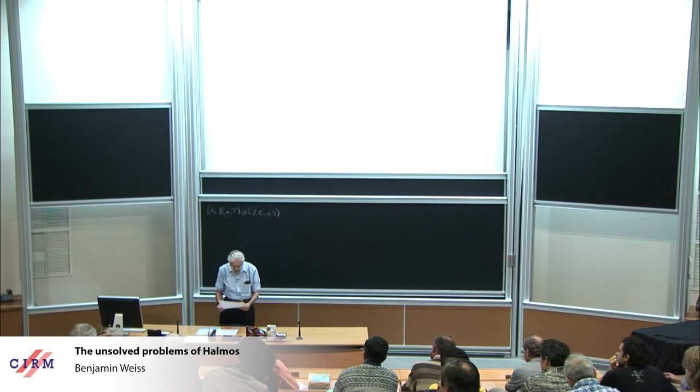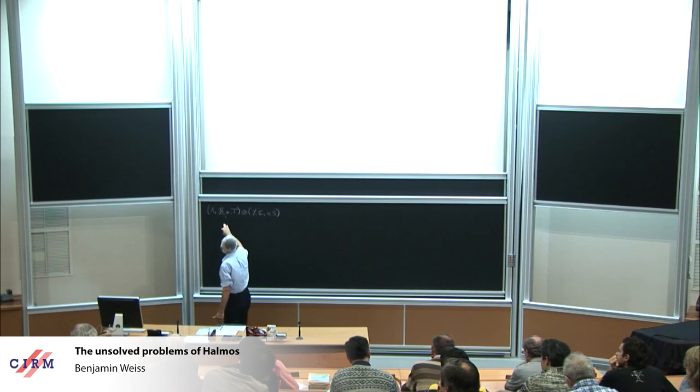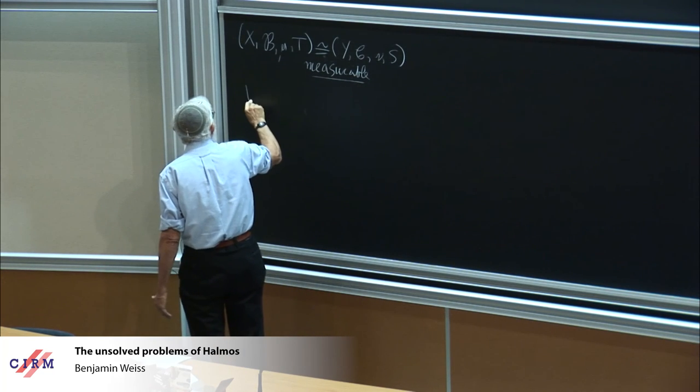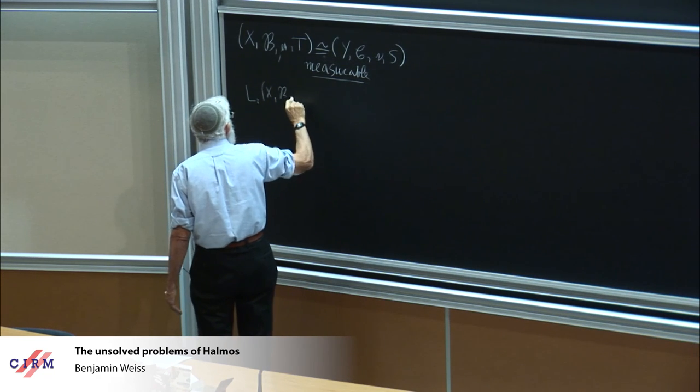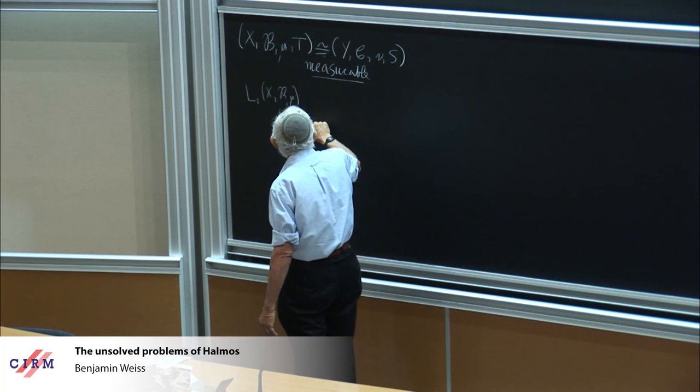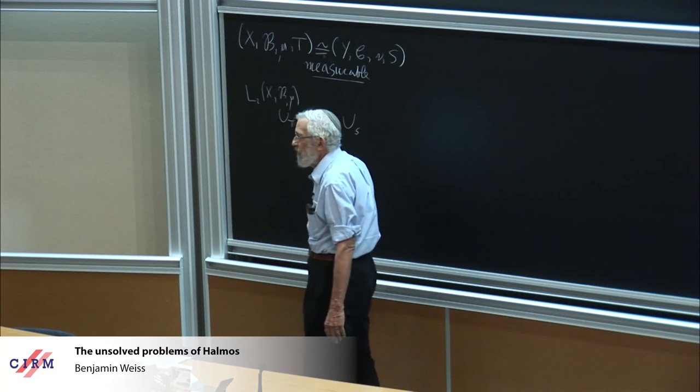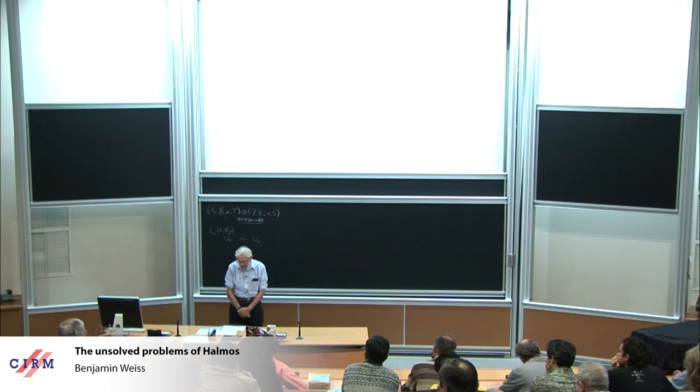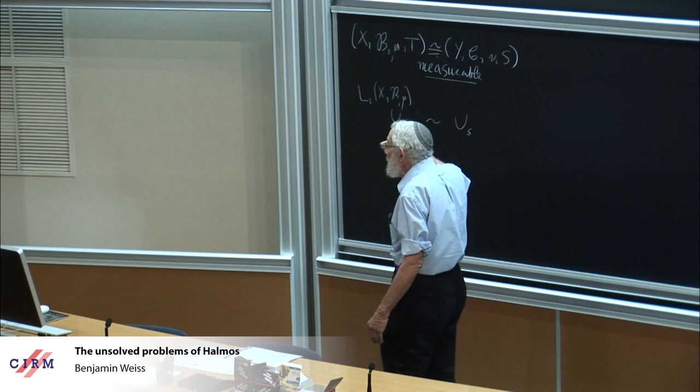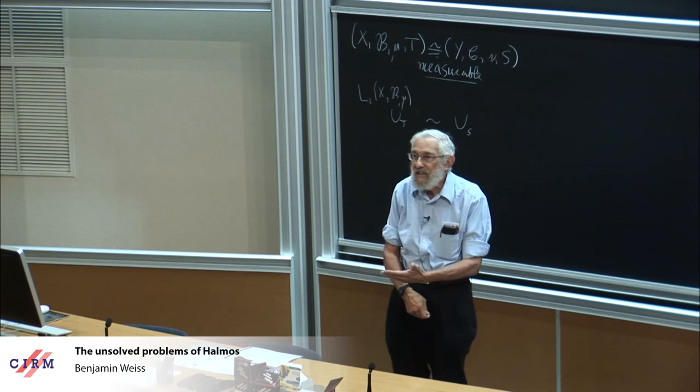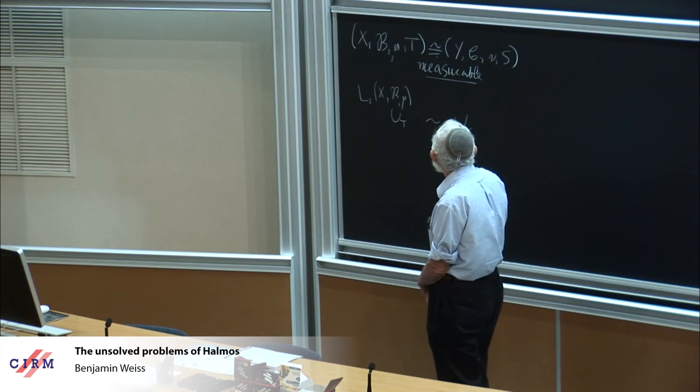The second is, do there exist two equivalent but non-conjugate transformations with continuous spectrum? So by equivalent, he means unitarily equivalent. So together with the measure-preserving equivalence, so this is measurable isomorphism, he's talking about unitary equivalence, where you look at the L2 space and the induced unitary operators. So U_T, this is the Koopman operator, which T induces on L2, and unitary equivalent means that U_T is unitarily equivalent to U_S.